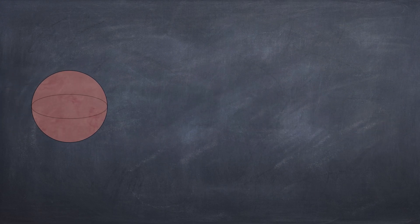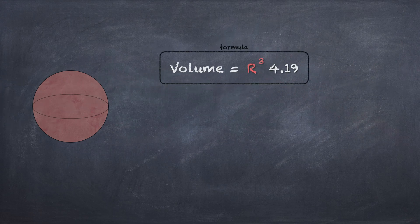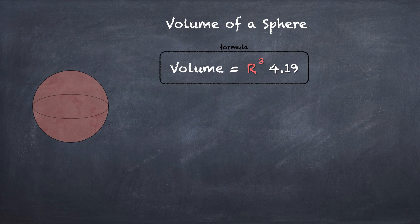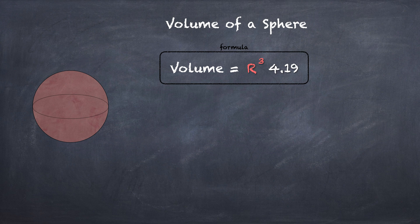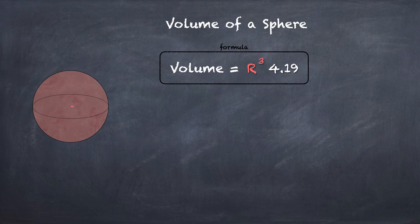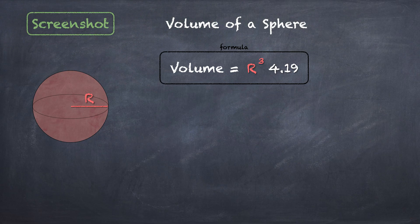Now we only have one shape left, which is a sphere. There's the formula for the volume of a sphere. This one is actually the easiest. It's R³ times 4.19. A lot of formulas you'll see say radius cubed times 4/3 times π. Well, if you just do 4/3 times π, that's 4.19. I think this is the easier method. All we got to do for a sphere is label the radius, then plug in. Screenshot this for your notes.